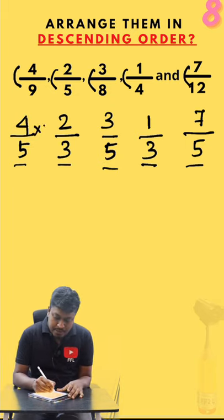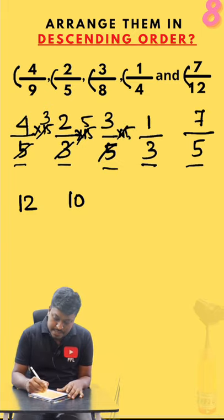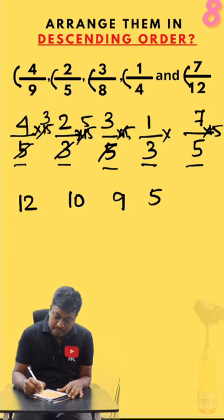Multiply with 15 with all the numbers. 5 times 3 is 15, total is 12. Into 15, 5 times 3 is 15, total is 10. Into 15, 3 times something into 15, 5. Into 15, this becomes 21.